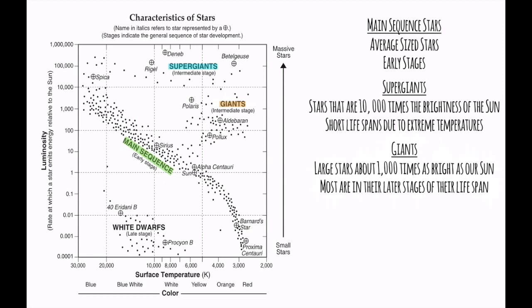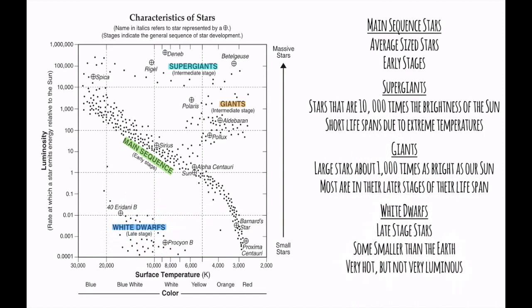And then finally, the last stage, the white dwarfs. These are all very late-stage stars. In the process of a star's life, this is usually the last step in a typical star's existence. Some white dwarfs are even smaller than the Earth. No matter what, because they're white, they burn very, very hot. But unfortunately, they're not very luminous. They don't really show up in the sky.